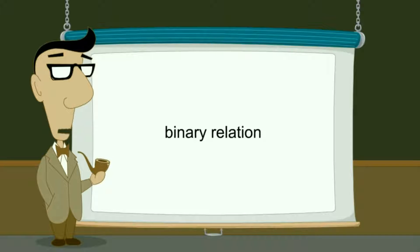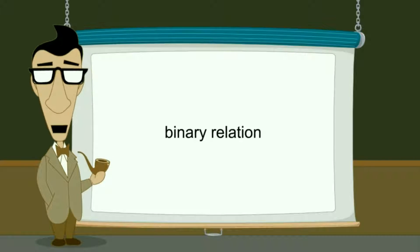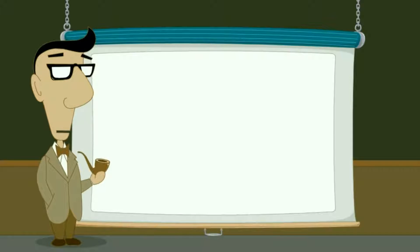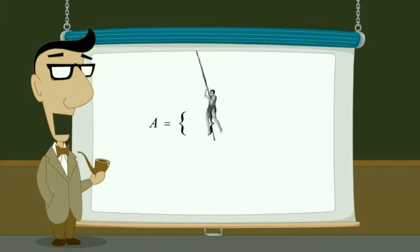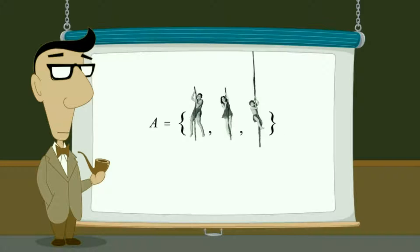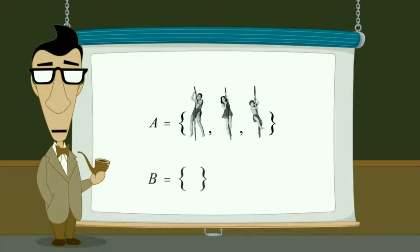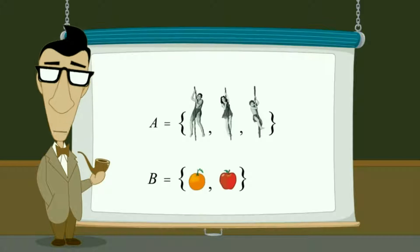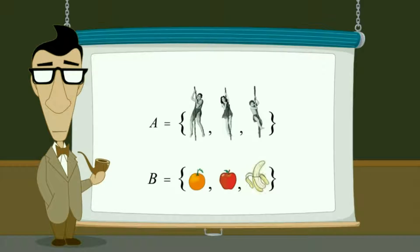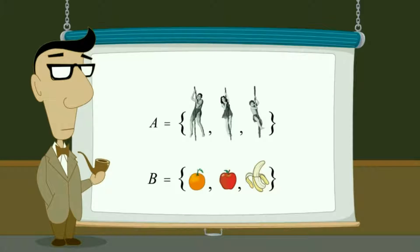A binary relation relates various elements of one set to elements of another set. For example, let's say that set A contains Tarzan, Jane, and Boy, and set B contains oranges, apples, and bananas. How might the elements of these two sets be related?